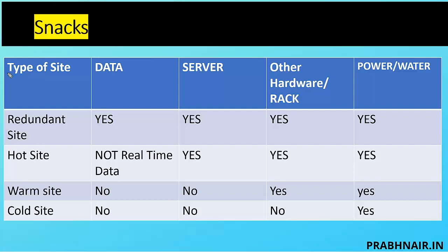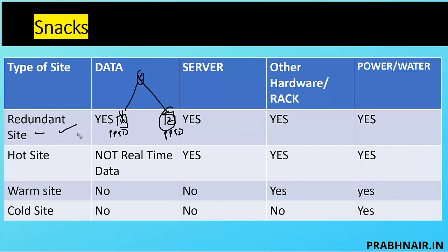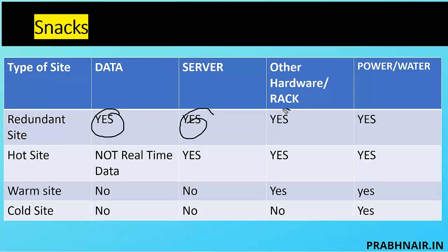When talking about sites, we have different types. The first is called a redundant site. In a redundant site, we have Site 1 and Site 2. Whatever we have in Site 1 — people, process, technology, and data — the same exists in Site 2. If Site 1 is down, service automatically comes from Site 2. We look for a redundant site when the business is highly critical and the customer is okay to invest in recovery. In both locations, we have data, servers, racks, power, and water.